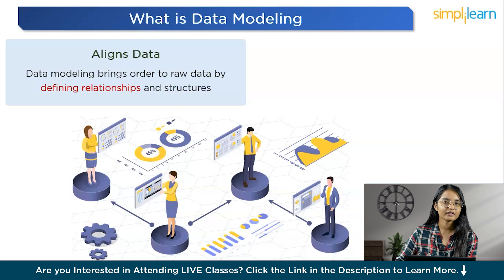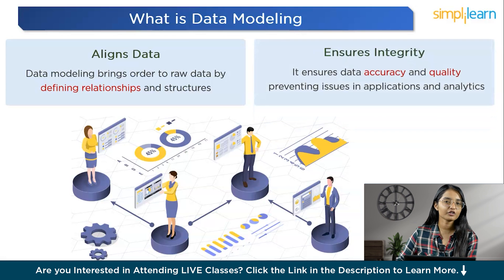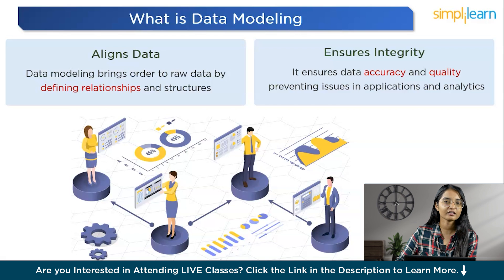Think of it like this: suppose you are an architect designing a blueprint for your data. You decide how different pieces of information relate to each other — like how payment connects to orders, or how customer details link to their purchase history. It visually represents different data elements and how they relate to each other, following certain predefined rules and guidelines. Data modeling is the foundation for everything you do with your data. It ensures data integrity and accuracy, making sure your machine learning models aren't just training on garbage data or giving nonsensical predictions. Moreover, it aids in database design, application development and data analysis. And data governance — having a clear understanding of where your data lives, what types of data you're storing, and the security measures — is key to compliance with regulations and standards.